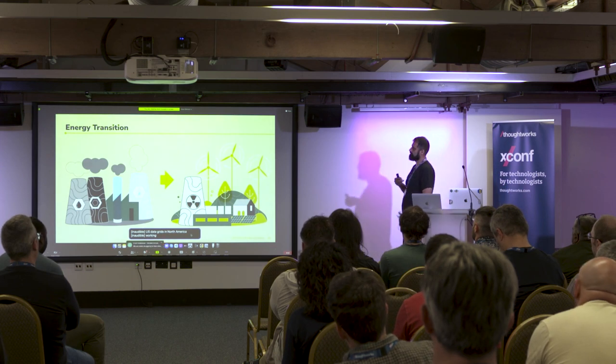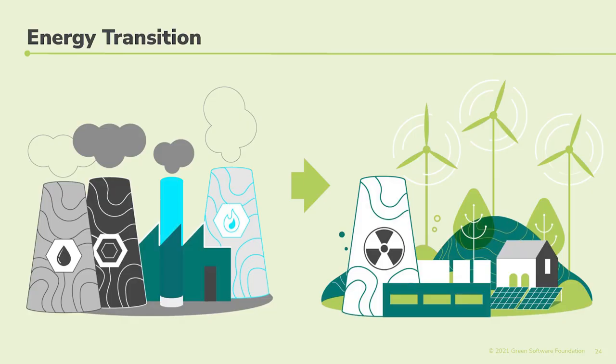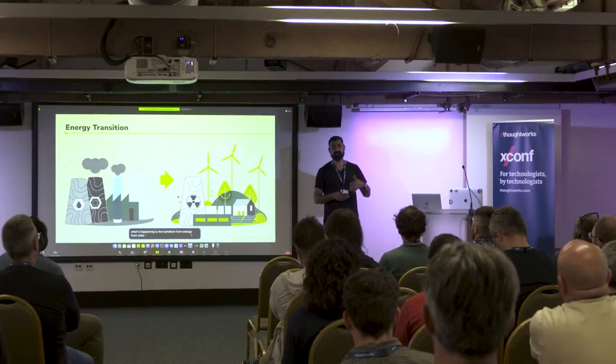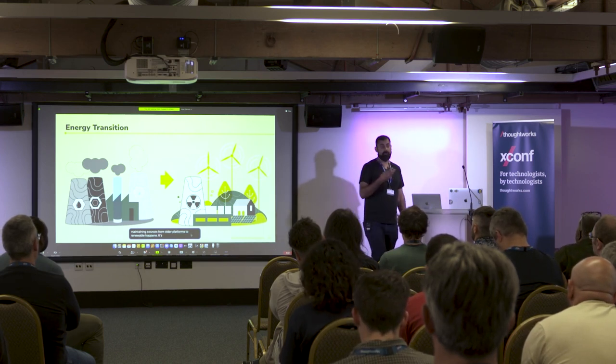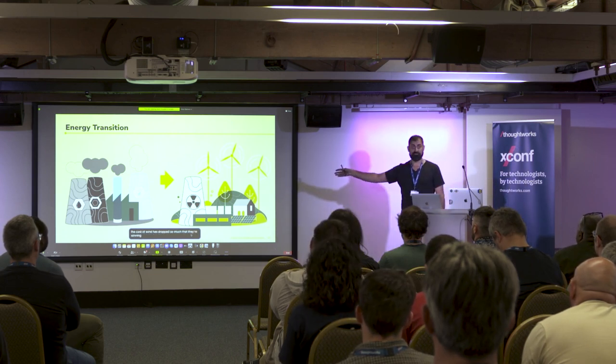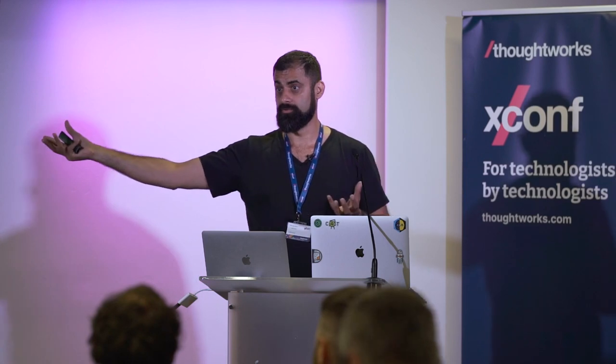Right now what's happening is the energy transition — a transition from high-emitting power plants to renewable power plants. The cost of solar and wind has dropped so much that they're extremely competitive and winning because they're cheaper. Our goal is to help accelerate this transition. One way you can help is by using electricity with lower carbon intensity, because that means your money is going towards renewable plants, and also your application is emitting less carbon directly.